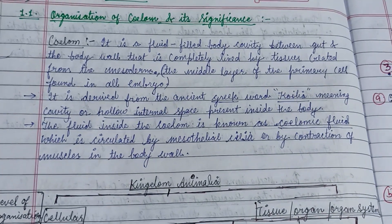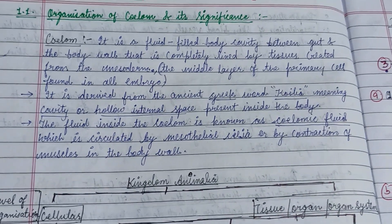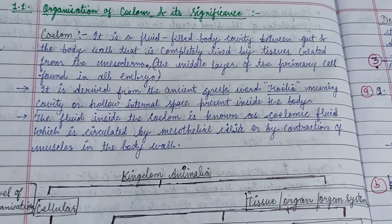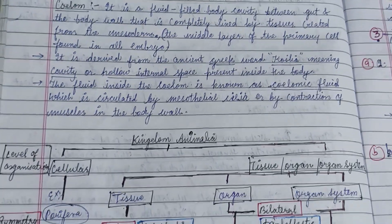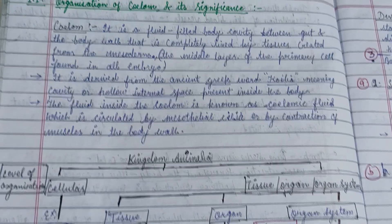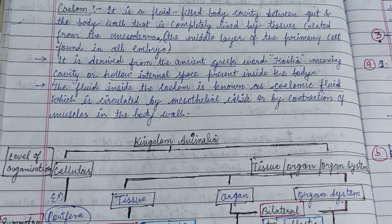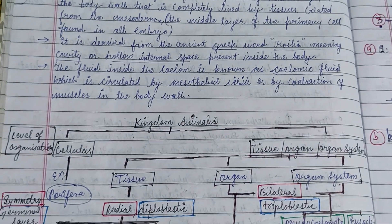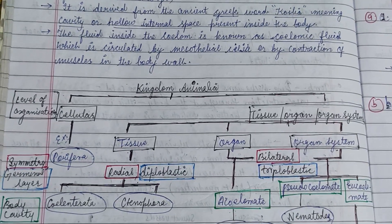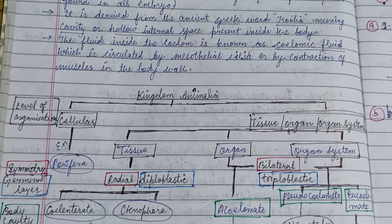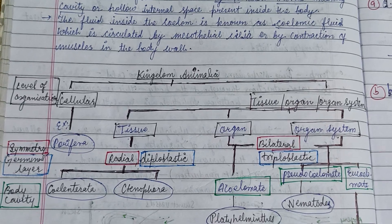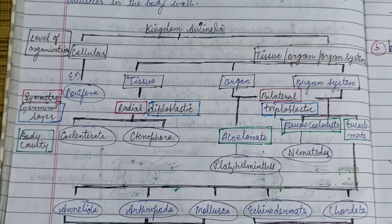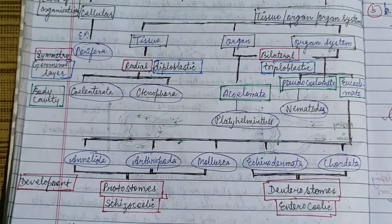Welcome to this video about the organization of the coelom and its significance, included in Unit 1 of CC1 of Semester 1. The coelom is a fluid-filled body cavity between the gut and the body wall, completely lined by tissues derived from the mesoderm. The fluid inside the coelom is known as coelomic fluid, which is circulated by mesothelial cilia or by contraction of the muscles in the body wall.